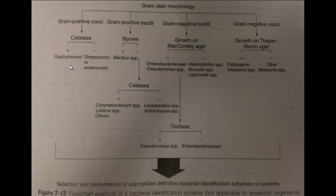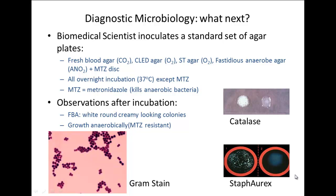This chart only provides genus-level identification, so we may choose to do another test. We will do a coagulase test — this is a commercial version called the Staphorex test. It tests for protein A, a protein that Staphylococcus aureus produces, and for clumping factor, which allows S. aureus to coagulate plasma. In this test, the test strain emulsified into the reagent has gone all clumpy and grainy — a positive result — compared to the negative control. So we more than likely have Staphylococcus aureus.